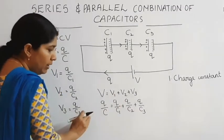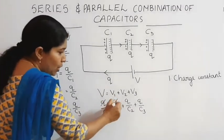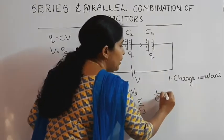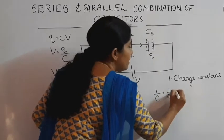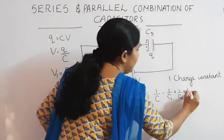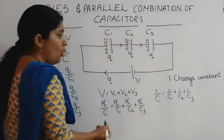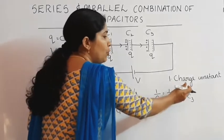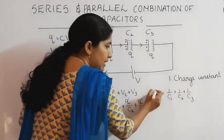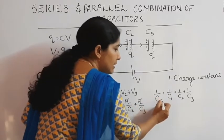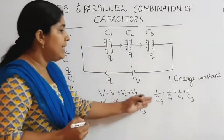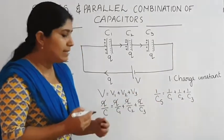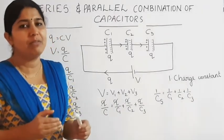Q remains constant everywhere, so Q gets cancelled. Then, 1 by C is equal to 1 by C1 plus 1 by C2 plus 1 by C3. In series combination of capacitors, this effective capacitance is taken as Cs. Therefore, 1 by Cs is equal to 1 by C1 plus 1 by C2 plus 1 by C3.